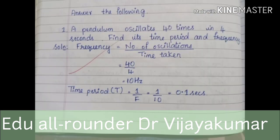Answer the following. A pendulum oscillates 40 times in 4 seconds. Find its time period and frequency. Frequency equals number of oscillations divided by time taken: 40 by 4 = 10 Hz. Time period = 1 by f = 1 by 10 = 0.1 seconds.